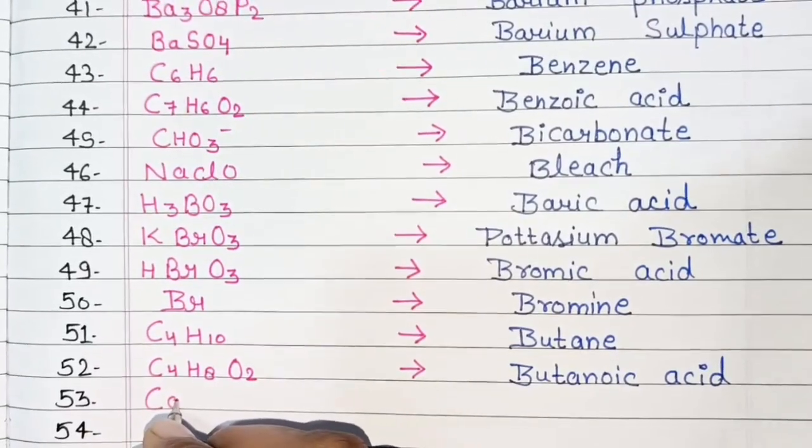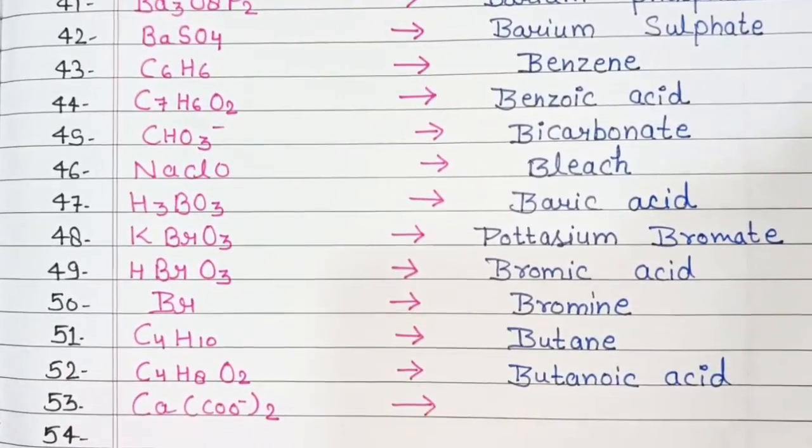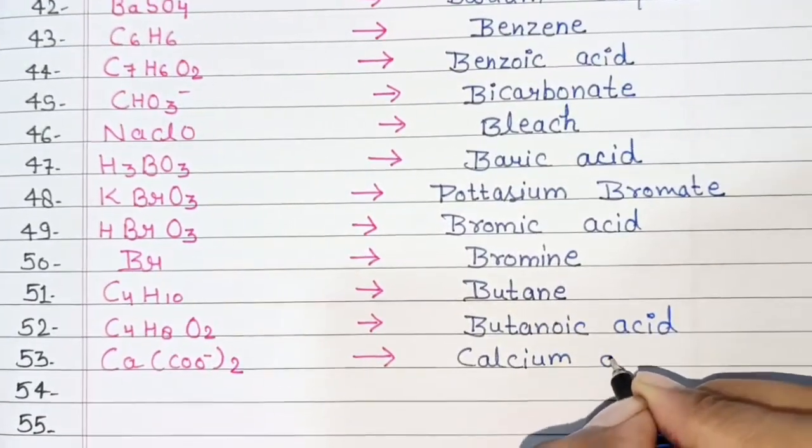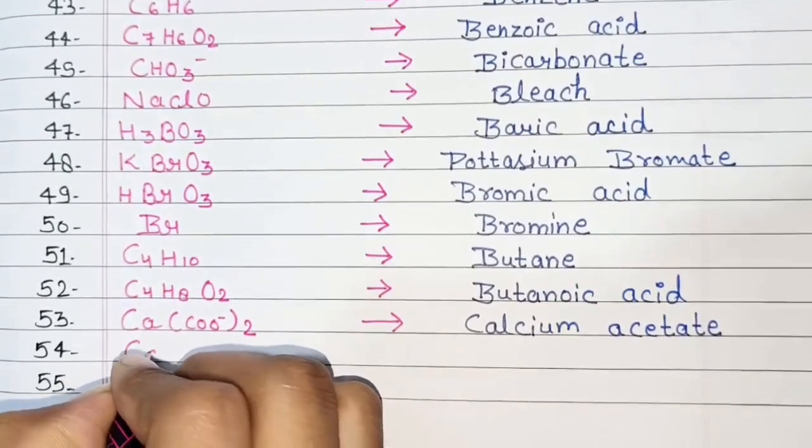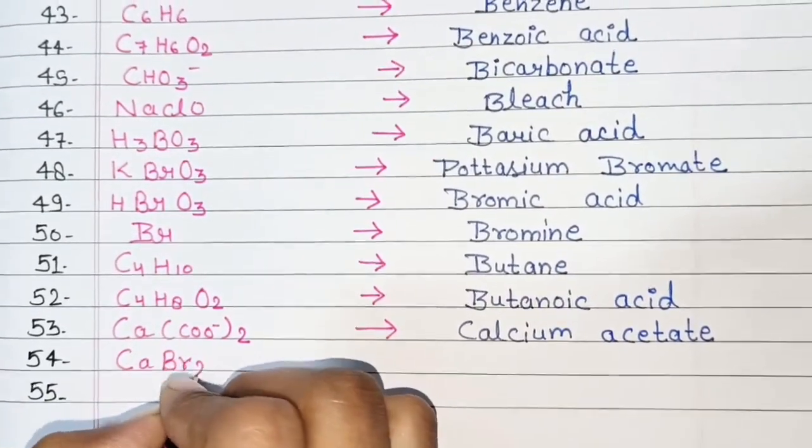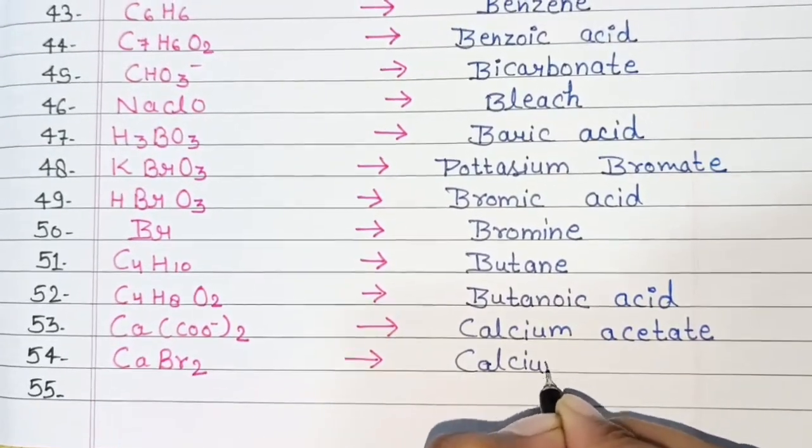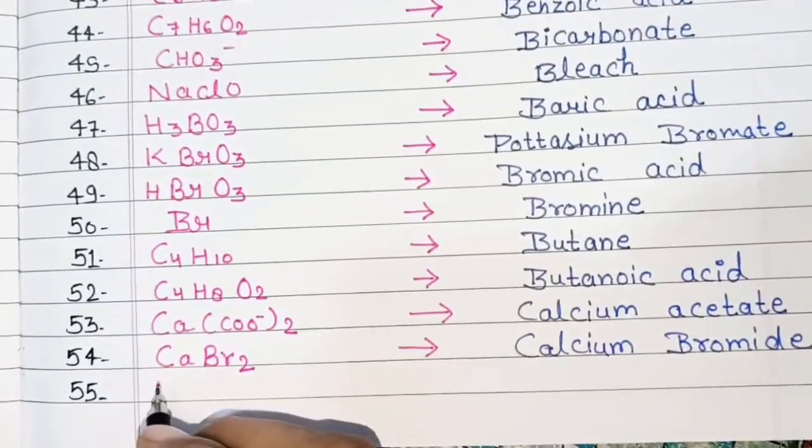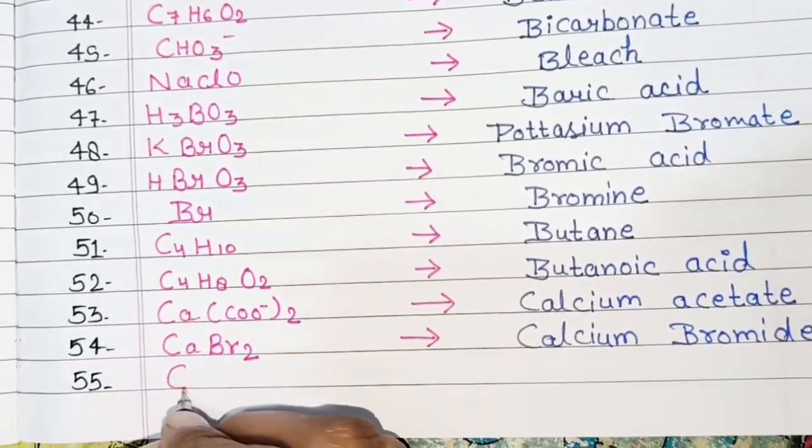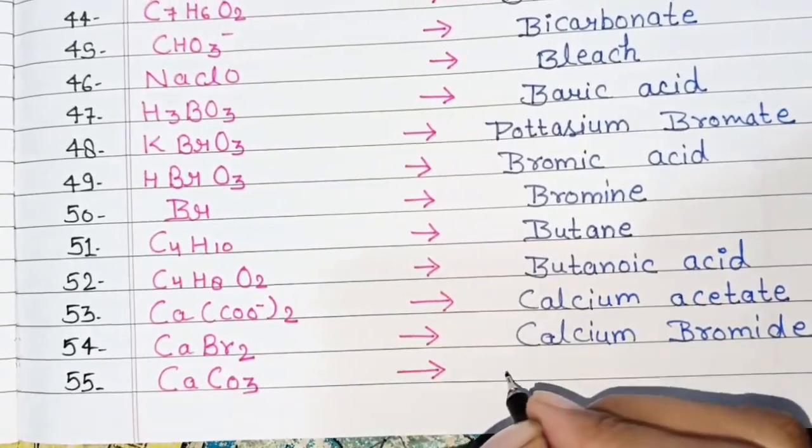Ca(C2H3O2)2, Calcium Acetate. CaBr2, Calcium Bromide. CaCO3, Calcium Carbonate.